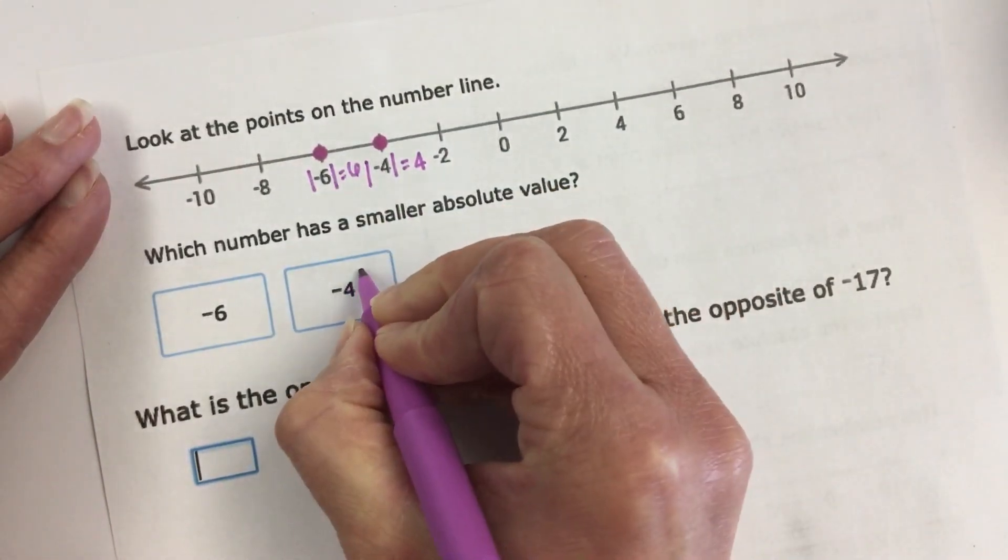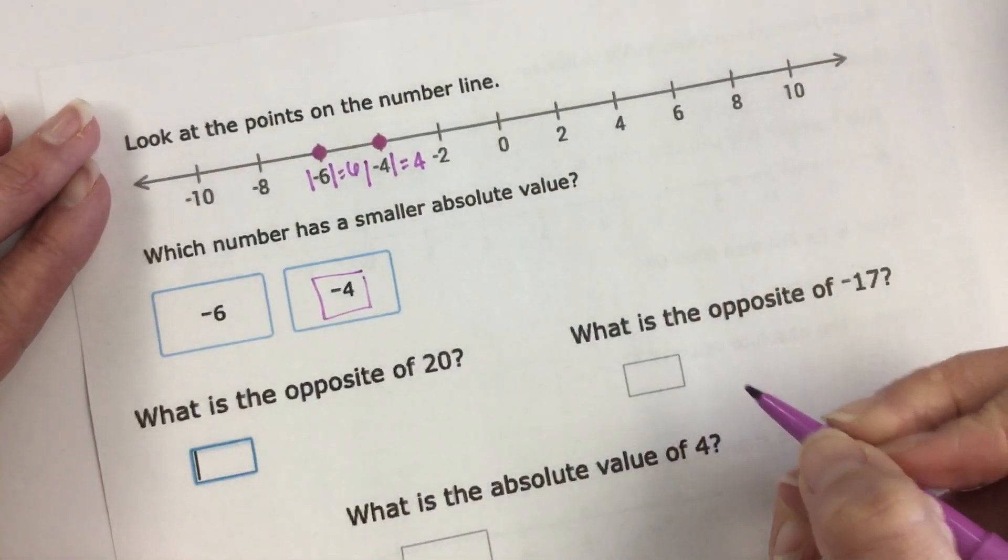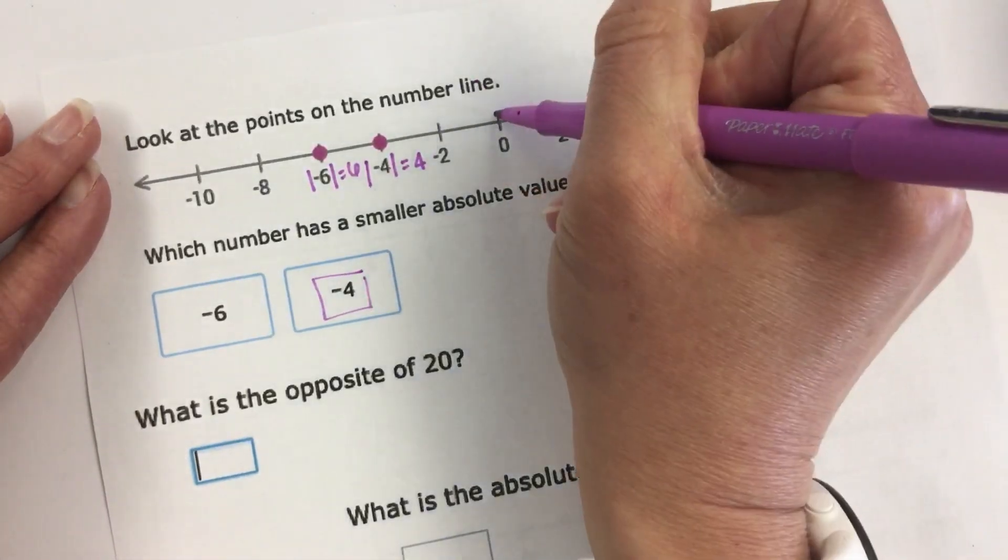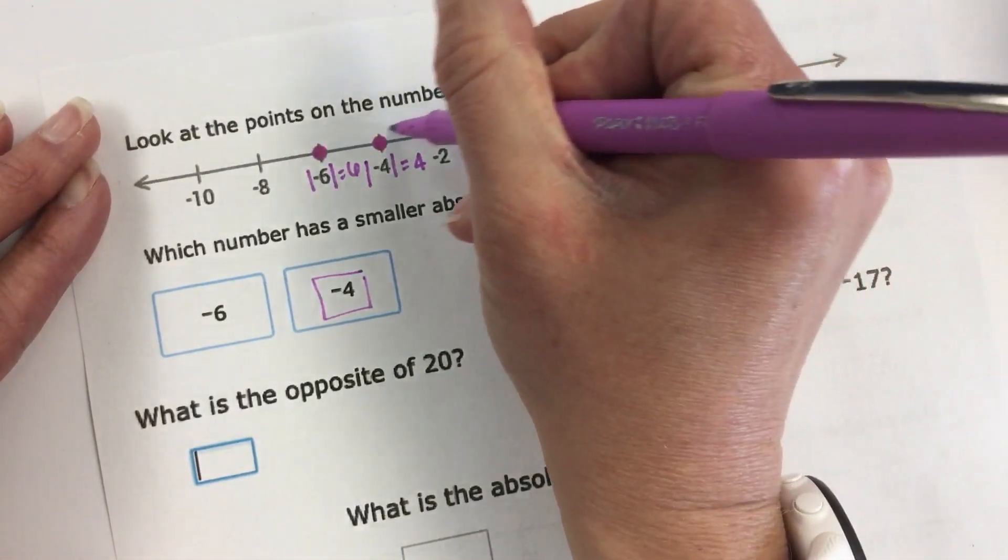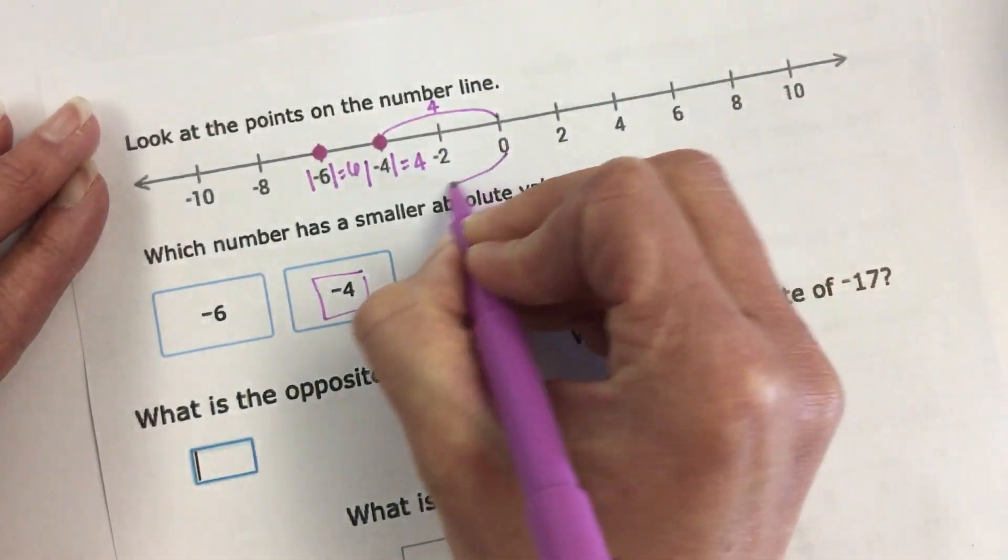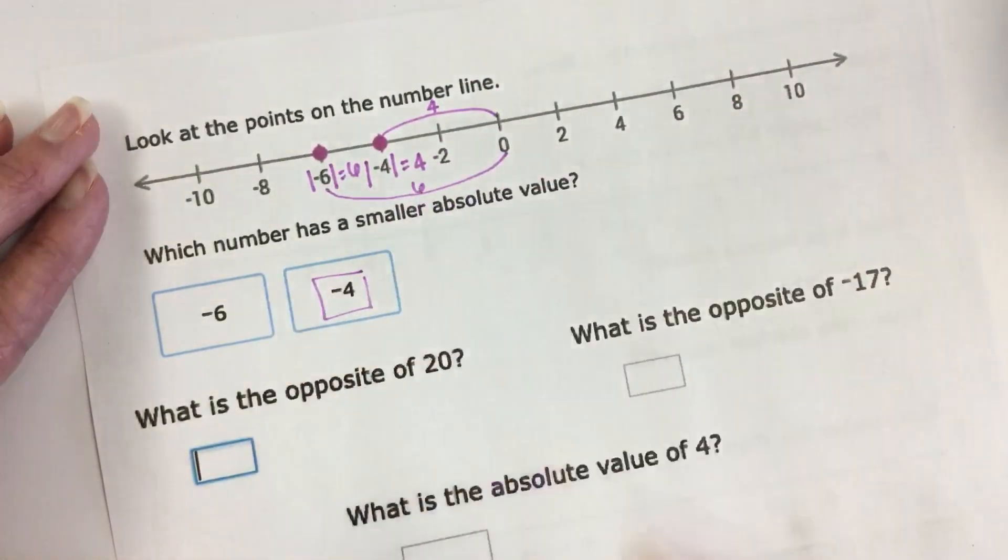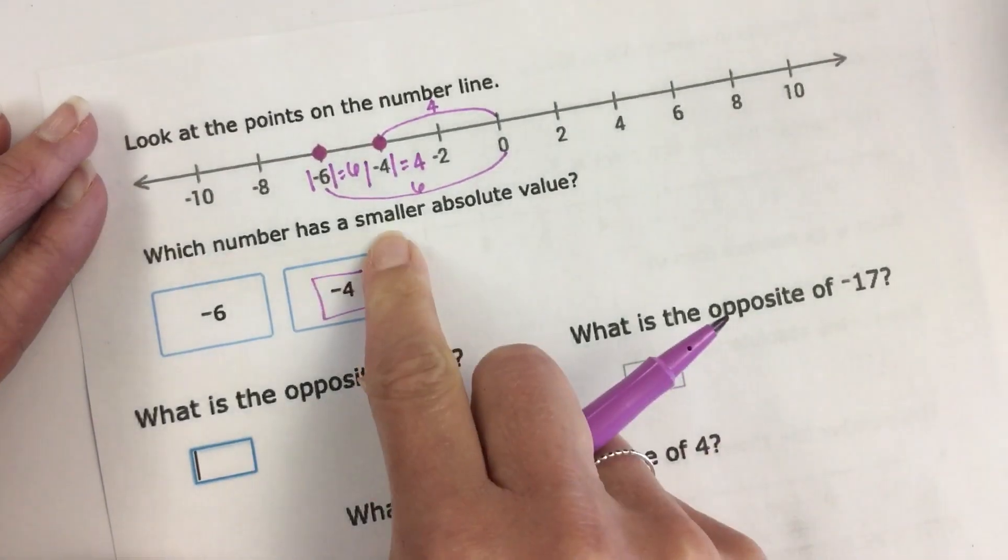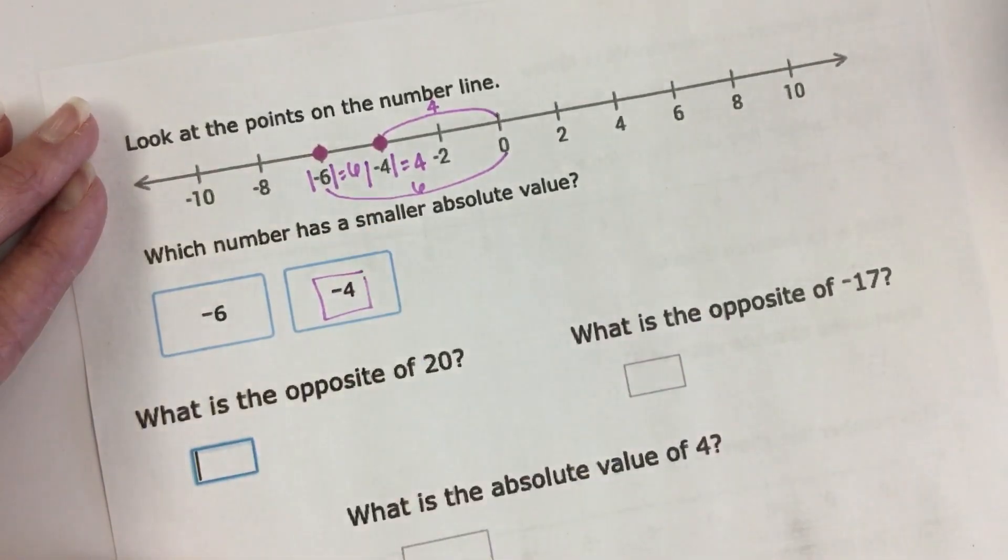So four, negative four would have the smaller absolute value. Negative four is four units from zero and negative six is six units from zero. So pay attention if they're asking for larger or smaller.